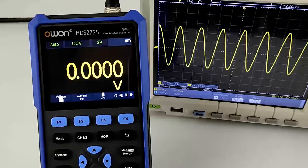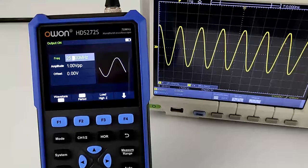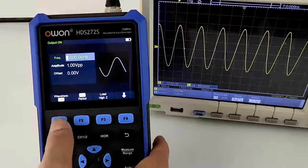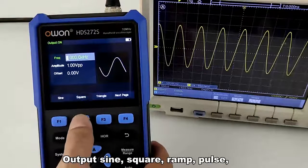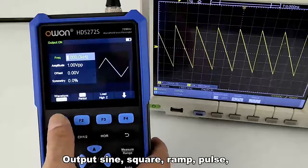The waveform generator has 14-bit vertical resolution and max 25 MHz output frequency. Output sine, square, ramp, pulse, and 8 common arbitrary waveforms.